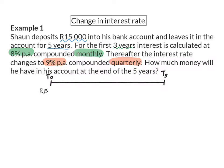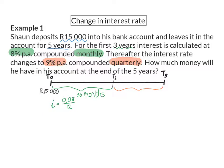We were given that Sean deposits or starts with 15,000 rand. For the first 3 years there's a fixed interest rate, and after that it changes. For the first 3 years the interest rate is calculated monthly, so my period for the first 3 years will be in months, and 3 years worth of months will be 36 months. The interest rate is 8%, which I then also still have to rewrite in terms of months, so I'll have to divide by 12. After this, the interest rate changes to 9%, compounded quarterly. So for the next 2 years, from year 3 to year 5, the interest rate will be determined quarterly — that means 2 years worth of quarters, and 2 times 4 is 8 quarters. The interest rate is 9% compounded quarterly, so I still have to divide it by 4.